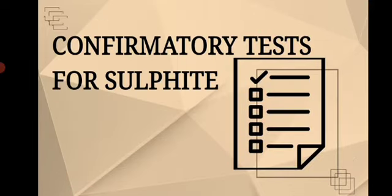For the second confirmatory test, which is for sulfite ion — let's have a short introduction. Sulfites are compounds containing the sulfite ion. In the sulfite ion, the sulfur atom is double-bonded with one oxygen atom and single-bonded with the two other oxygen atoms, resulting in one lone pair of electrons on the sulfur. Sulfites are often used as preservatives in dried fruits, brined radishes, and fried potato products.